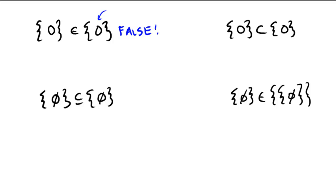In the top right: is the set containing zero a proper subset of the set containing zero? This one's kind of a trick question. The only thing inside the left set is the number zero, and it is certainly on the right. However, according to our textbook, when we don't put that extra bar across the bottom, that means we need something that's actually a proper subset and is not equal to. The two sets on the left and right are actually equal, so technically this statement is false.